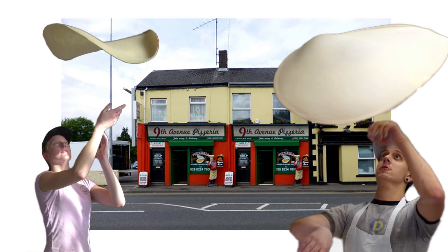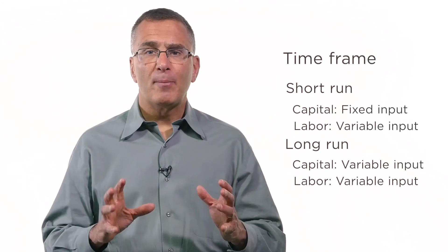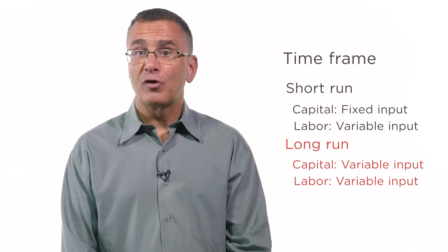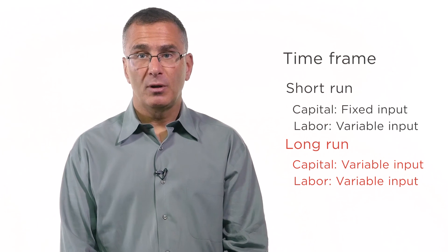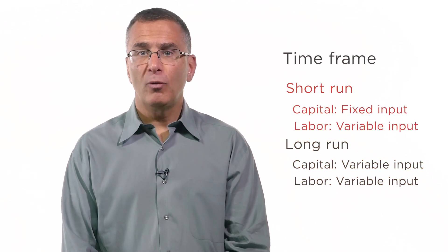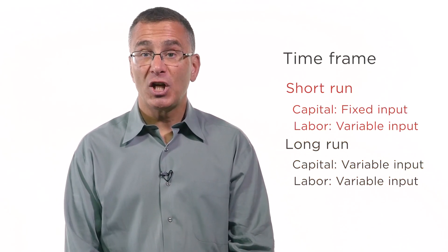So how long is the short run? And when does it become the long run? Good question. What is considered short run and long run varies depending on the context and the specific production function we're talking about. Just remember that in the long run, all inputs are variable and firms can adjust the level of any input. In the short run, at least one of the inputs is fixed and cannot be changed by the firm.